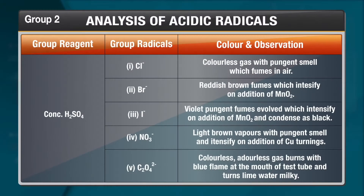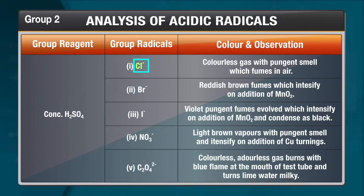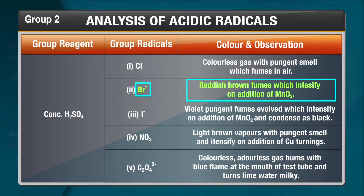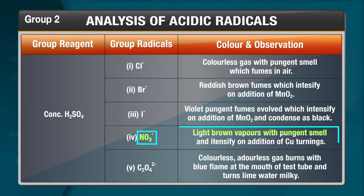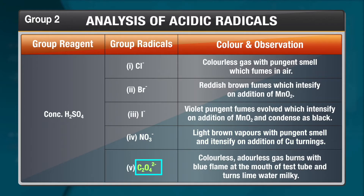Now let us check the second group, where the group reagent is concentrated H2SO4. We have chloride, bromide, iodide, nitrate, and oxalate. For chloride, you get a pungent smell which fumes in air. For bromide, reddish brown fumes which intensify on addition of MnO2. For iodide, violet pungent fumes which intensify on addition of MnO2 and condense as black. For nitrate, light brown vapors with pungent smell, intensifying on addition of copper turnings. For oxalate, a colorless odorless gas which burns with blue flame and turns lime water milky — confirming carbon dioxide.